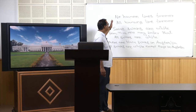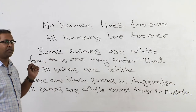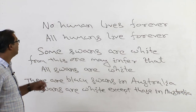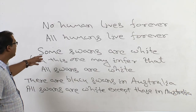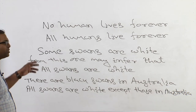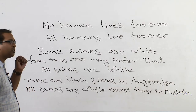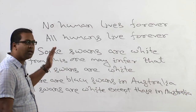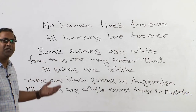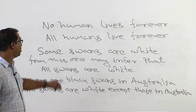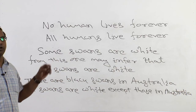The statement 'No human lives forever' is not falsifiable, but we can always falsify 'All humans live forever' by producing a dead human being. Now consider another statement: 'Some swans are white,' from which one might infer 'all swans are white.' But suppose somebody says there are black swans found in Australia — then you must change your statement, because 'all swans are white' is easily falsifiable by producing a black swan.